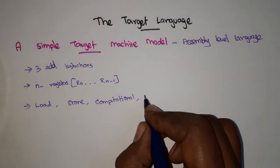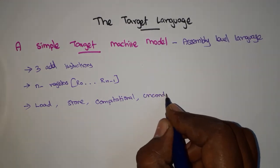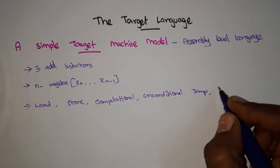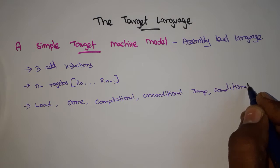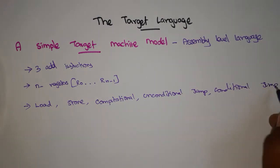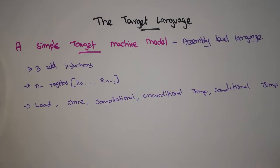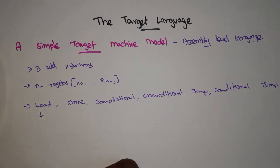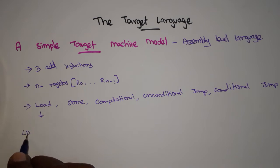There are two types of jump statements: one is unconditional jump and another one is conditional jump. These are the assumptions made about the assembly-level target language we are going to consider. These are all the instructions present in the assembly-level language.